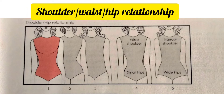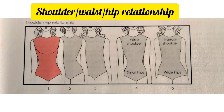The next figure variation is the shoulder, waist, and hip relationship. The first model in the picture is ideal — the shoulder, waist, and hip are in harmony. The second model has an hourglass shape created by a small waist. The third model has a straight line with a slightly defined waist. The fourth model has wide shoulders and a narrow waist, while the fifth model has narrow shoulders and wide hips.